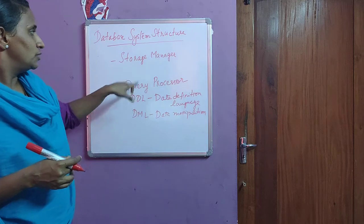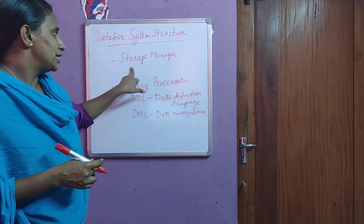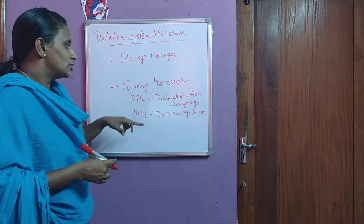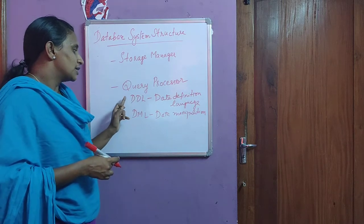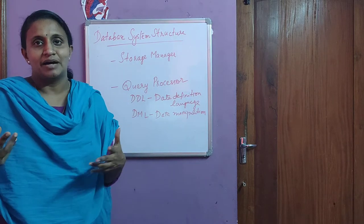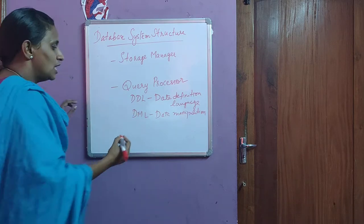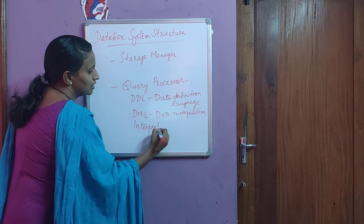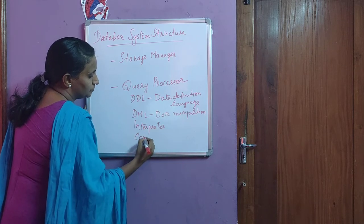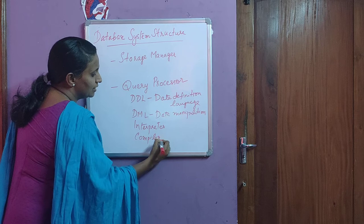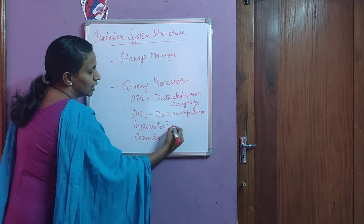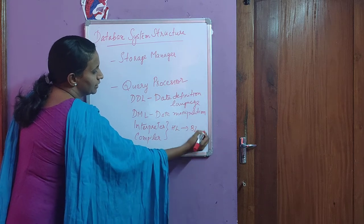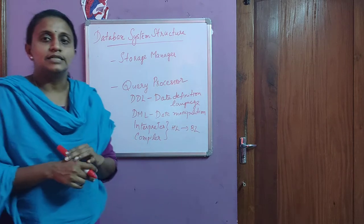To summarize the system structure: the two main components are the storage manager, which includes the transaction manager and file manager, and the query processor, which includes DDL, DML, compiler, and interpreter. The interpreter and compiler are used for converting from a high-level language to binary language.